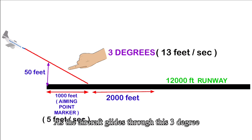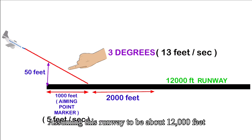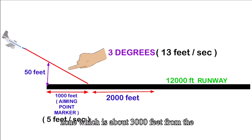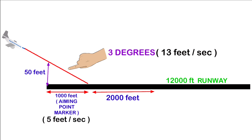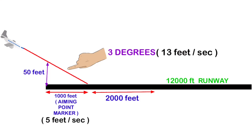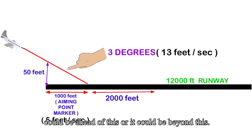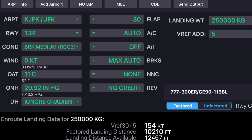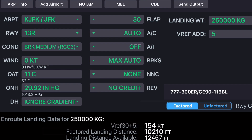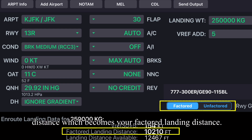As the aircraft glides through the three-degree angle, the rate of descent is typically around 13 feet per second, and at touchdown it is around 5 feet per second. Assuming the runway is about 12,000 feet long, the touchdown zone extends to 3000 feet from the beginning, giving a margin of about 1000 feet ahead of the touchdown point and 2000 feet beyond. To offset practical variations in where the aircraft touches down, a margin of 15 percent has been added to the actual landing distance, which becomes the factored landing distance.